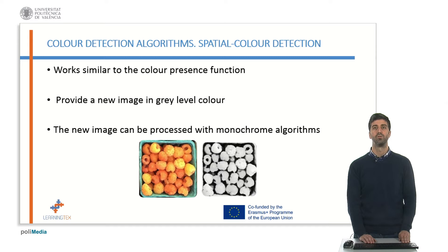The spatial color detection function uses the same database as color detection functions and can work with the same colors created. The difference between them is that the spatial color detection functions give information about the quantity of colors learned by the system, but without spatial information about the colors. The spatial color detection functions give as a result a new monochrome image with different gray color levels for each color. The new image can be processed with the monochrome algorithms described in previous lessons. On the image on the slide, it can be seen how the new image is obtained in gray-level colors.